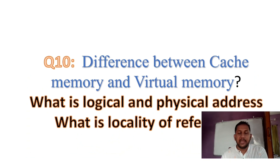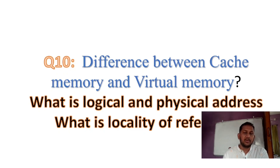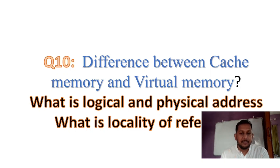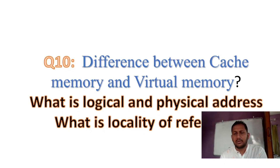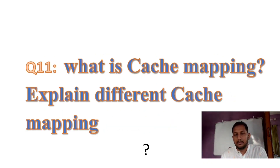Question 9 and 10: Difference between cache memory and virtual memory. What is the difference format? What is the logical and physical address? What is the locality of reference? What is the cache memory property? Question 10 is a theoretical question. What is cache mapping?